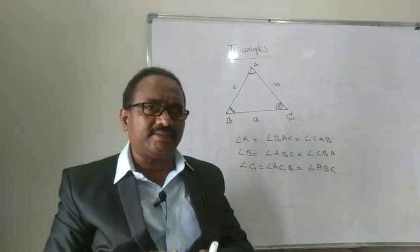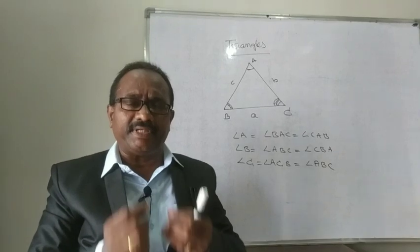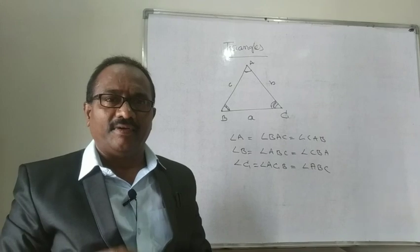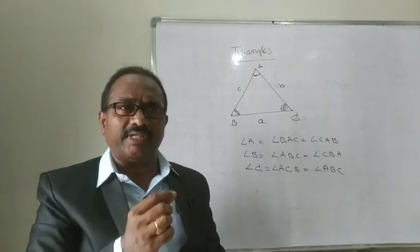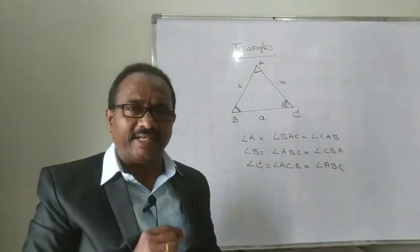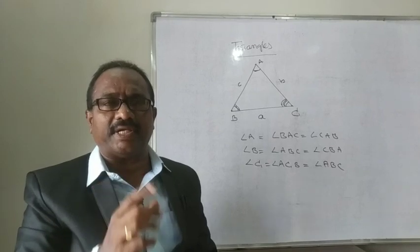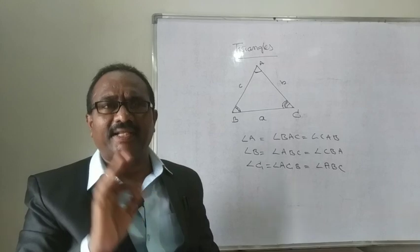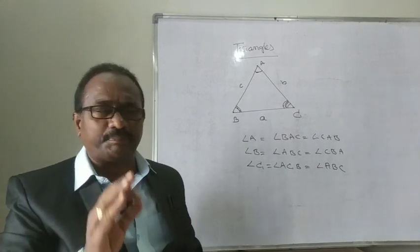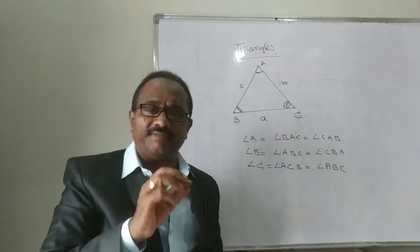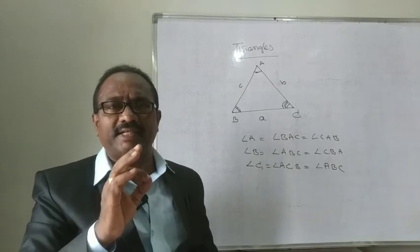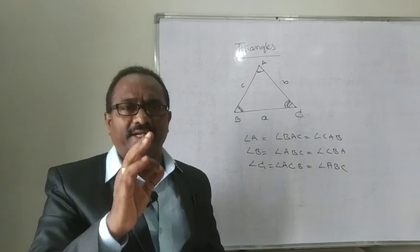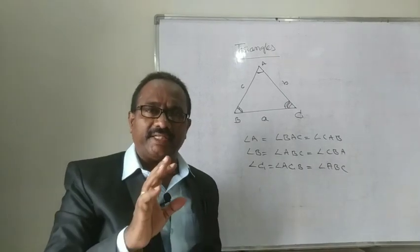An acute angle means the angle is between 0° and 90° — that is called an acute angle. Whenever an angle is more than 90° and less than 180°, that is called an obtuse angle. Whenever the angle is equal to 90°, that is called a right angle. With respect to angles, we have three types of triangles: one is an Acute Angle Triangle, second is an Obtuse Angle Triangle, and third is a Right Angle Triangle.